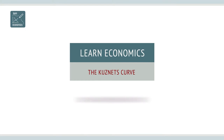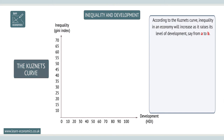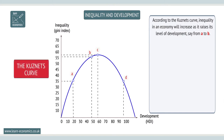Inequality and development: the Kuznets Curve. Inequality tends to increase as economies experience economic development. According to the Kuznets Curve, named after American economist Simon Kuznets, inequality in an economy will increase as it raises its level of development, say from point A to point B in the graph.